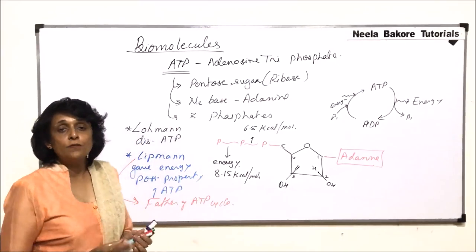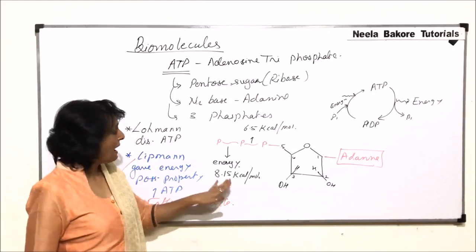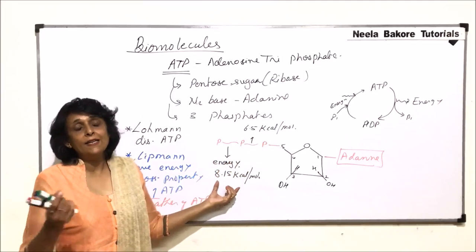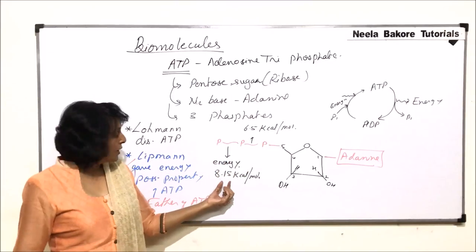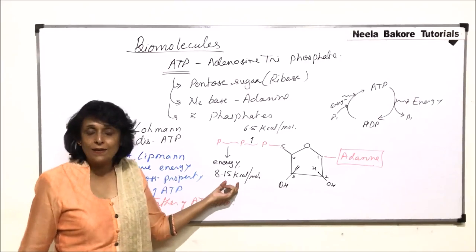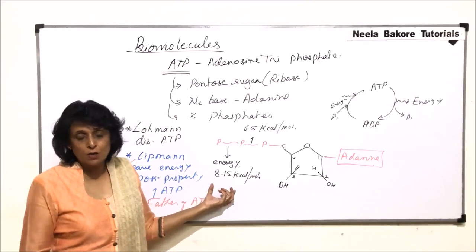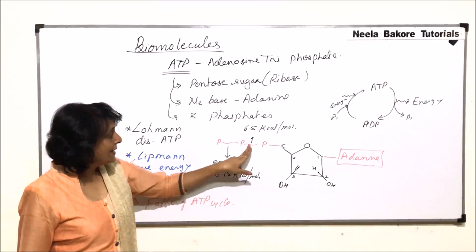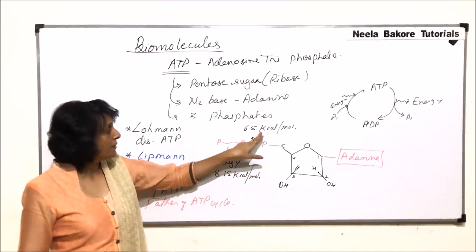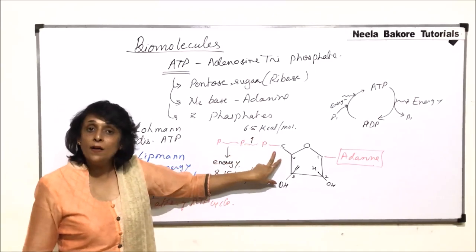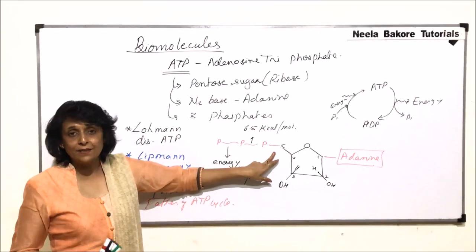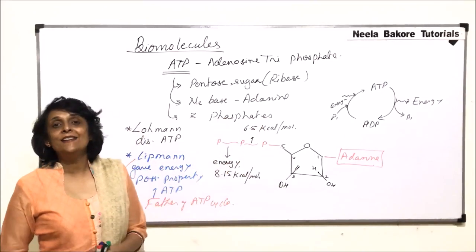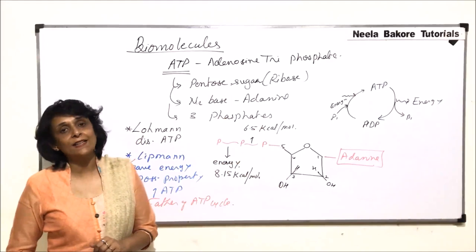Questions have been asked on the names of these two scientists. What we have to remember are these two energy values. Some older books give a value of around 7 point something kilocalories, but the latest proven value is 8.15 kilocalories per mole for the third bond, and 6.5 kilocalories per mole when the second bond is broken. The first bond is never broken to release energy, though it does possess some. This is our energy currency of the cell — ATP.